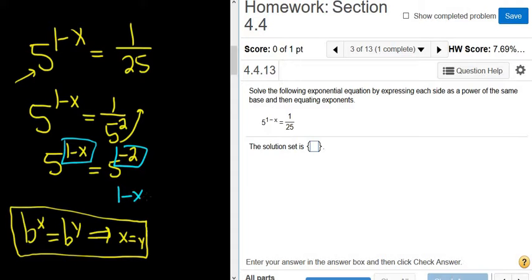So that means that 1 minus x is equal to negative 2. Then we can subtract 1 from both sides. So we get negative x equals negative 3. Divide by negative 1, or multiply by negative 1, and you get x equals 3.